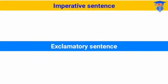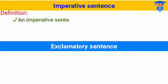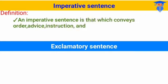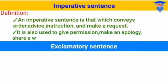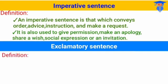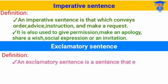Next, we discuss the differences between imperative sentence and exclamatory sentence, because sometimes they look alike. For imperative sentence, it conveys order, advice, instruction, or makes a request. It is also used to give permission, make an apology, share social expressions, or give an invitation — jadi selain kalimat perintah, bisa juga memberikan saran, instruksi, permintaan, atau ekspresi permintaan maaf.